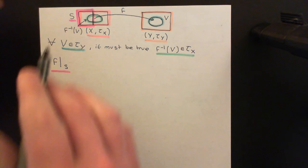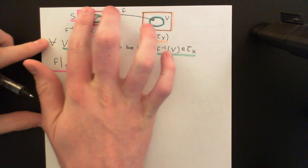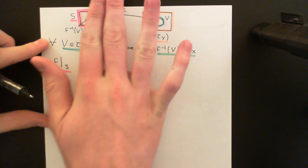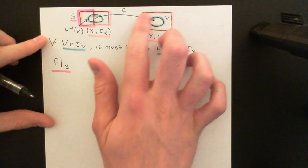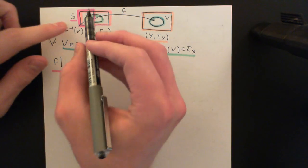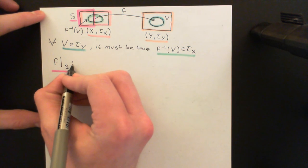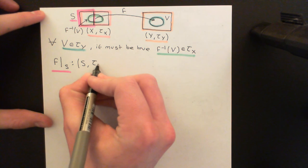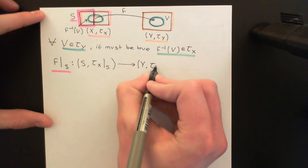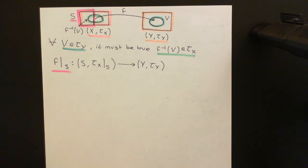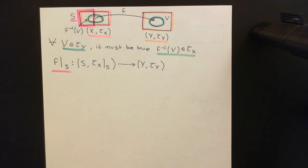My claim is that if you now view this restricted map as a function in its own right — imagine the rest of X has gone and we've got our subset S here, now a set in its own right — I claim that this function F from capital S to the set Y is going to be continuous if we put on this set capital S the inherited topology from the larger topological space X. So this function mapping S with inherited topology tau X restricted down to S, onto the topological space Y with topology tau Y, will still be a continuous function, providing that we use this inherited topology — you can't just come up with some brand new topology, it must be the inherited topology.